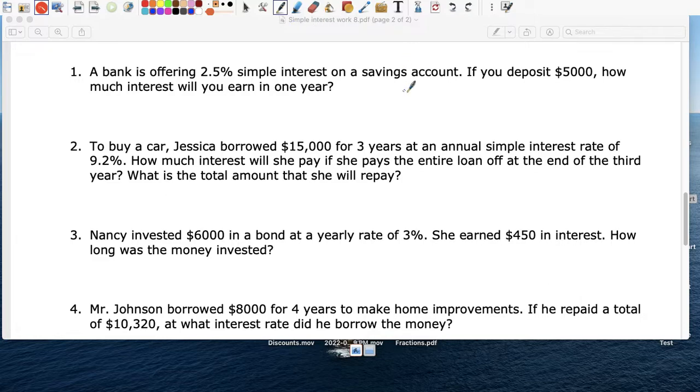Back page, bank is offering 2.5% interest rate, so again, PRT, if you put in $5,000 times 0.025 and leave for one year, how much money would you earn? Again, $5,000 times 0.025 times 1, you would earn $125, so your account would have $5,125.